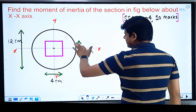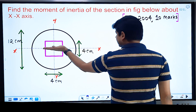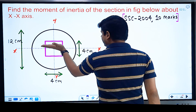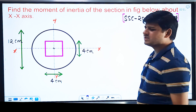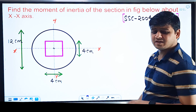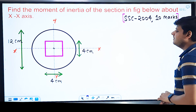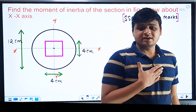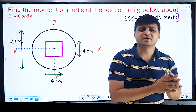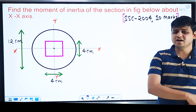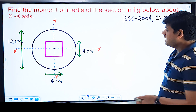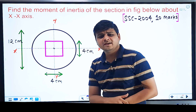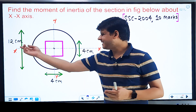The CG of the circle lies on this x-axis, and we need the moment of inertia about this same x-axis. The CG of the square also lies on this x-axis. Since both centroids lie on the x-axis itself, there is no need to transfer (shift) the moment of inertia using the parallel axis theorem.